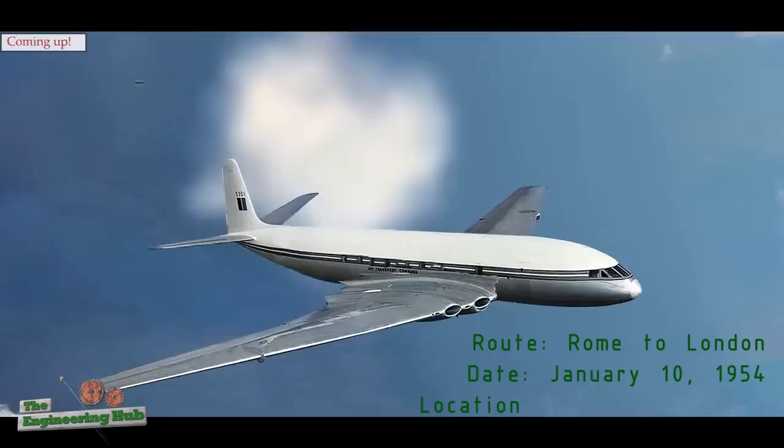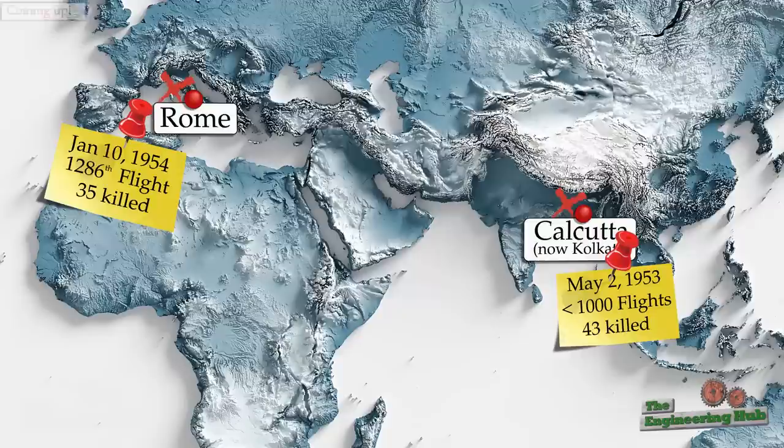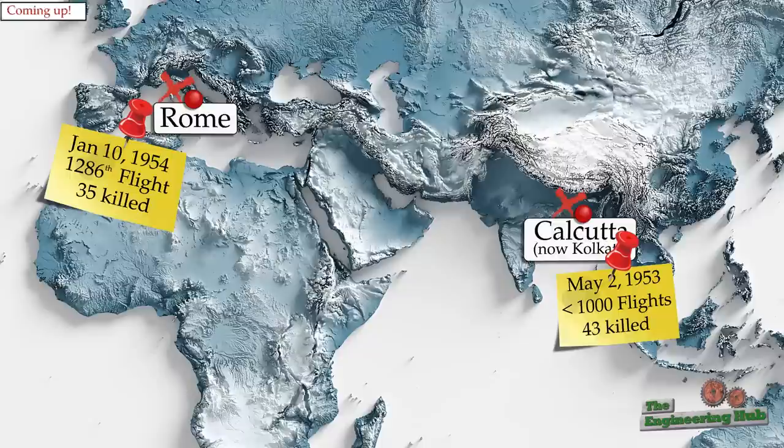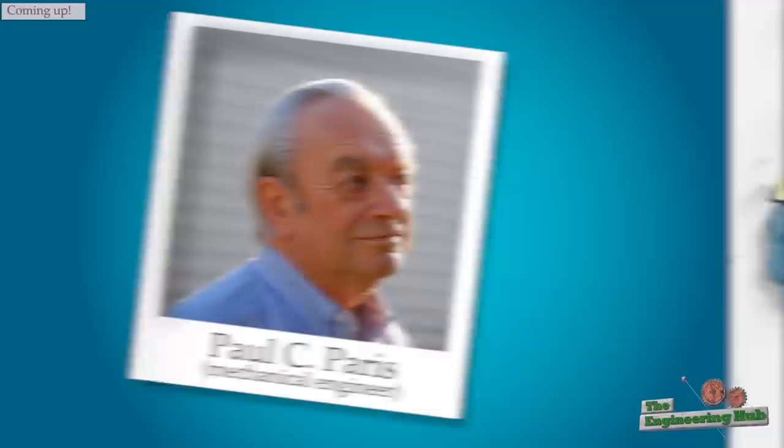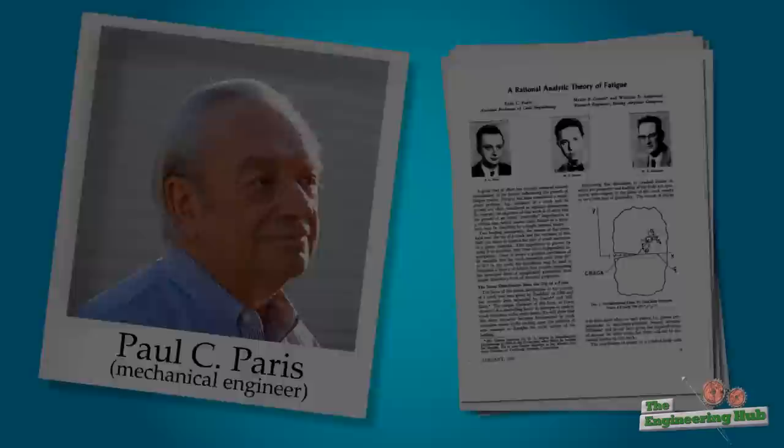This was not the first nor the last accident of the de Havilland Comet. These planes actually kept disintegrating during mid-flight without any warning. It took several years and nearly 100 lives lost to solve the mystery of why it kept happening. The worst part? It probably could have been avoided if the designers hadn't made a huge statistical blunder. Stay tuned to find out why and how these failures led to a better understanding of one of the most critical weaknesses of metals and a discovery of a very important engineering law which is widely used today and has prevented thousands of accidents.